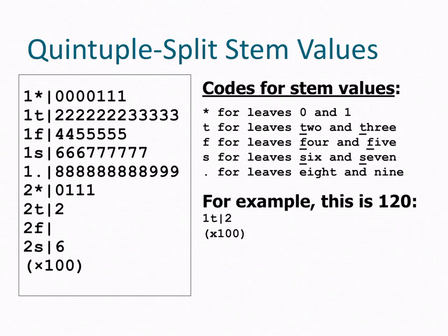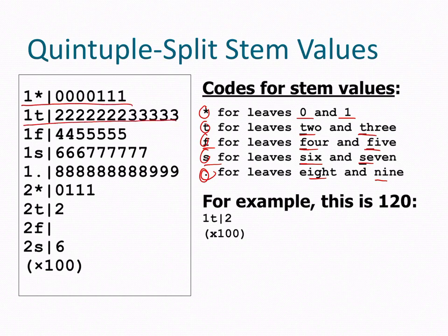We can divide it up even more into quintuplet split stem values. This gets a little bit crazier in how they divide it up, right? So in this one, you have your asterisks, your T, F, S, dot. And each one of these has two spots for the leaves. So the asterisk contains the leaves of 0 to 1, the T for 2s and 3s, the S for 4s and 5s, S for 6s and 7s, and then the dot for 8 and 9s. So as you can see, here's an example where this comes into play and how it would look.